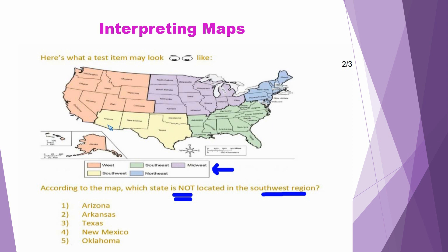When we review our map, we have Arizona, New Mexico, Texas, and Oklahoma located in the Southwest region. Coming down to our options, Arizona, New Mexico, Texas, and Oklahoma are the four states located in the Southwest region. Therefore, having identified those states, we know that it is Arkansas that is the state not located in the Southwest region.